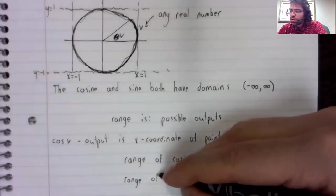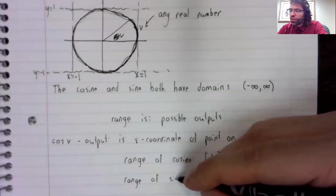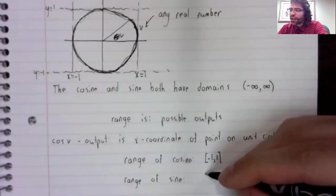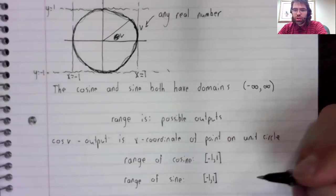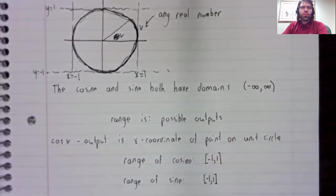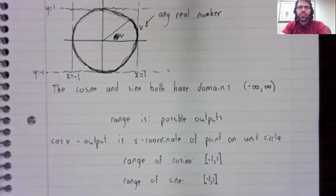So the range of the sine is also the closed interval from negative 1 to 1.